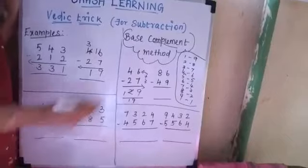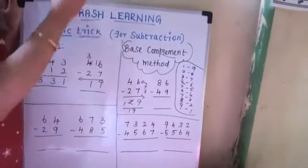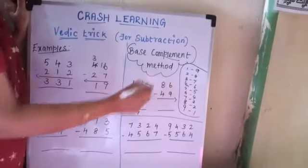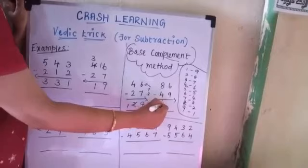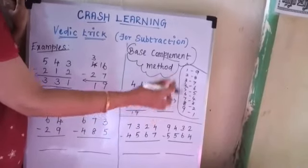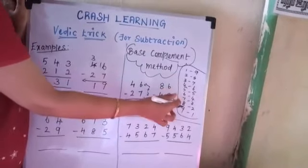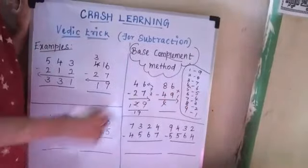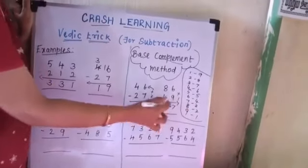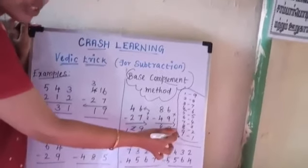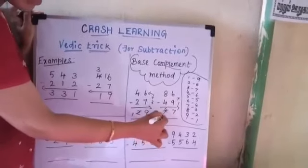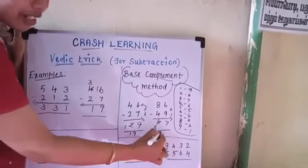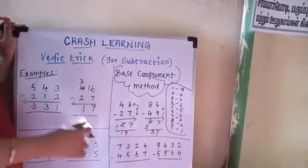Now let us take another example. As I said, we start from left to right. What is 8 minus 4? That is 4. Complement of 9 is 1, add with 6: you get 7. And since we took the complement, reduce the previous digit by 1. So the answer is 37.